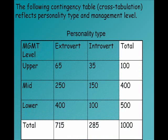So here we have some data where we're looking at a cross-tabulation of personality type and management level. Management level is a categorical variable with three categories: upper, mid, and lower. And personality type is divided into extrovert and introvert. So we just have counts here.